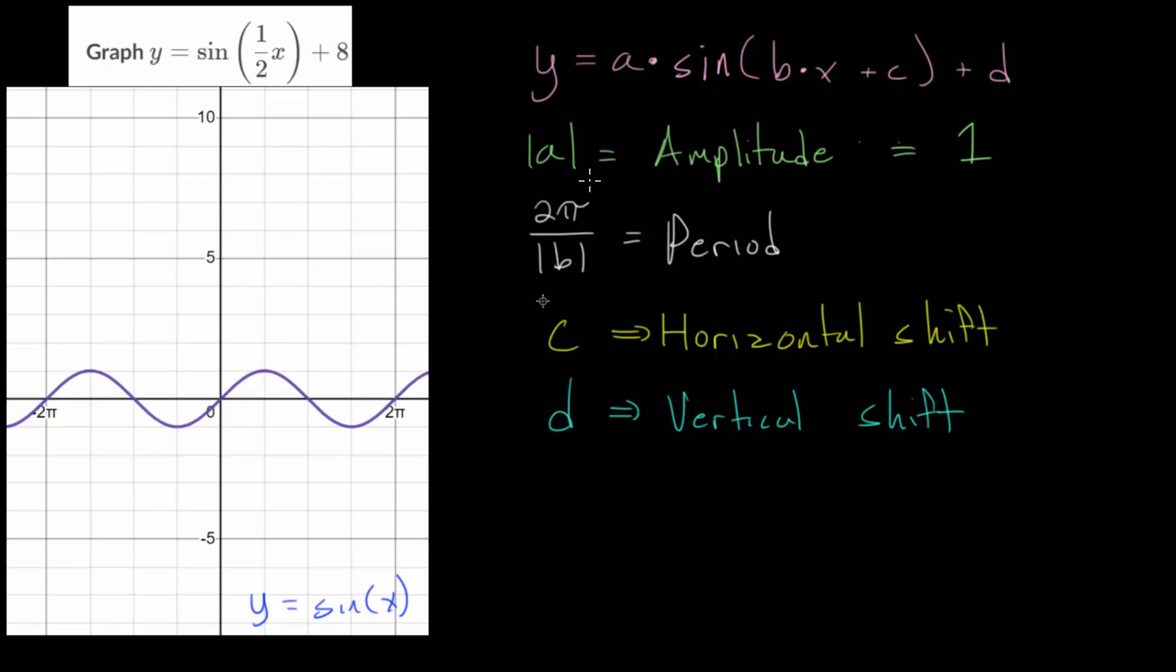And then the period would be 2π over b, or the absolute value of b, and b is 1/2. So the absolute value of 1/2 is still 1/2. And we're dividing by a fraction, which is the same as multiplying by that fraction flipped over. So we have a period of 4π.